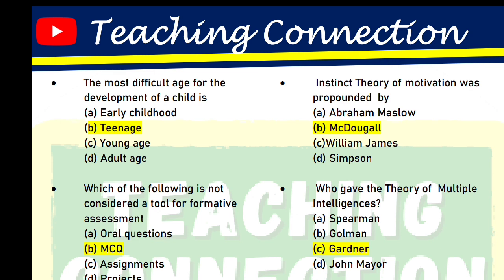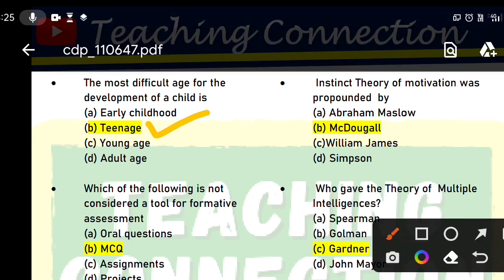Today's first question is: what is the most difficult age for the development of a child? For this question, I think everyone will know that teenage is the most difficult age. In teenage, children have a lot of identity crisis. Teenage is also called the storm age.